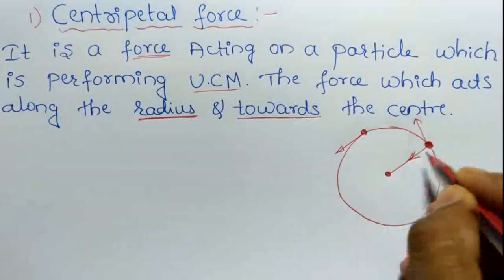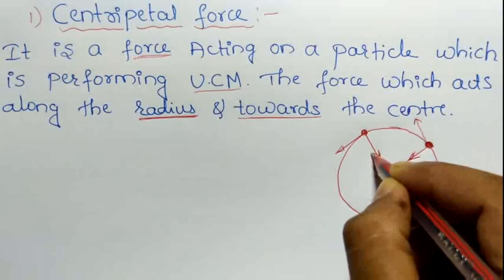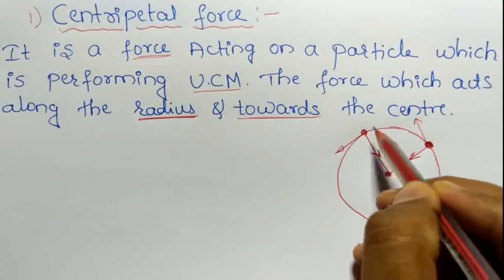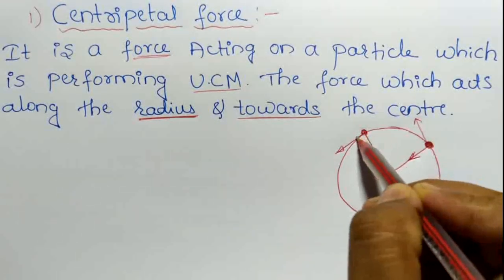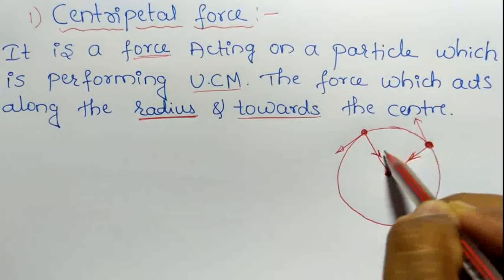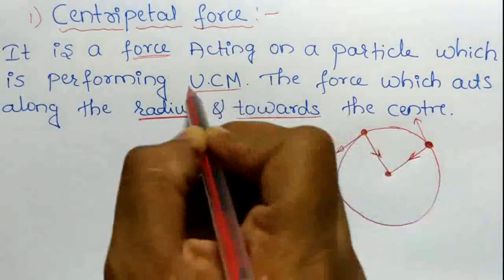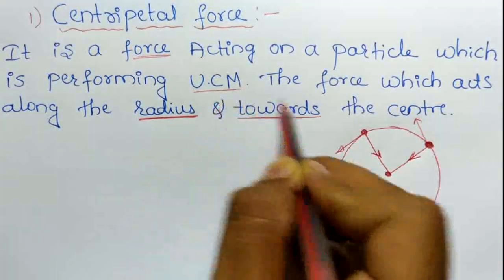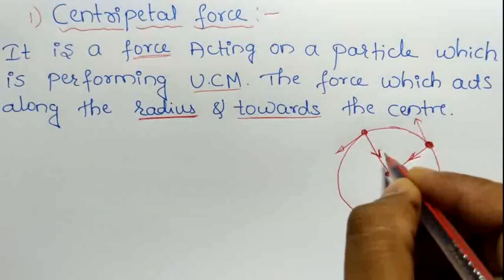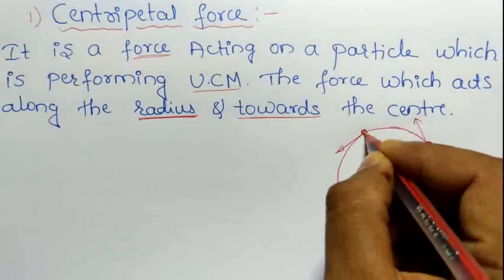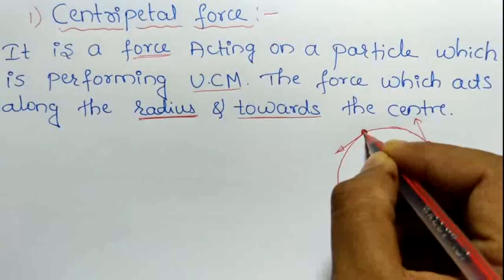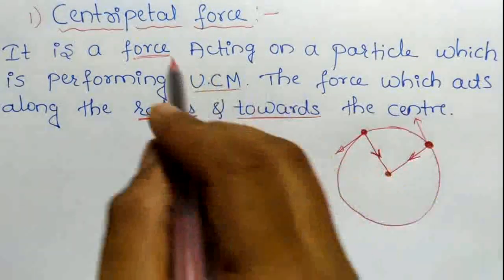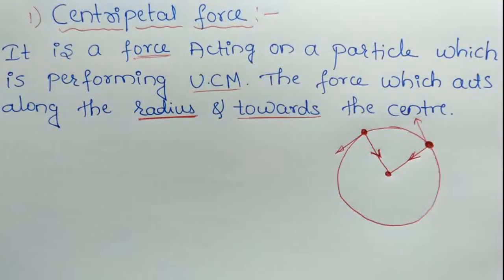If the particle is here, the centripetal force will act towards the center like this. This centripetal force keeps the particle in circular motion. If there is no force, the particle will go away from the center or away from this circle. So there is one force which keeps the particle moving in a circle.